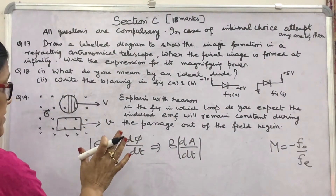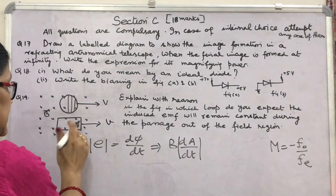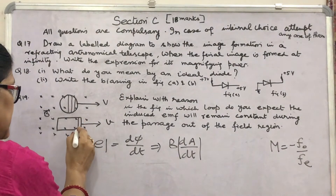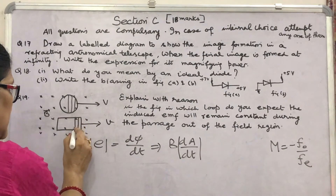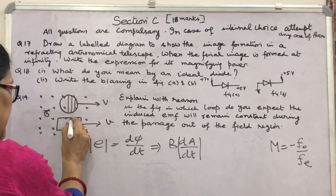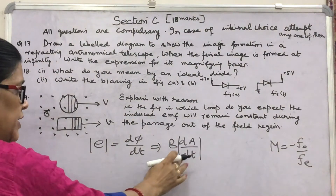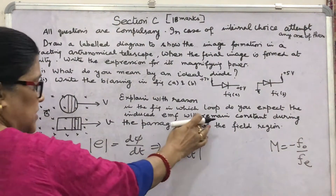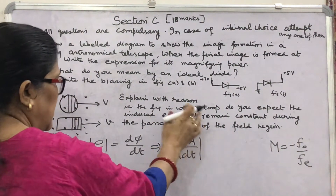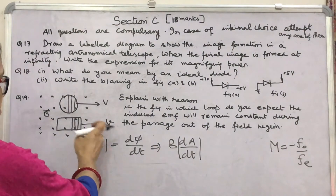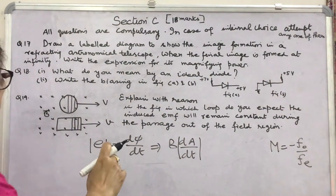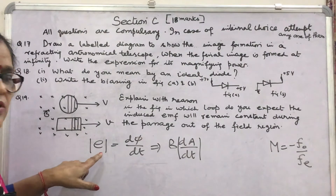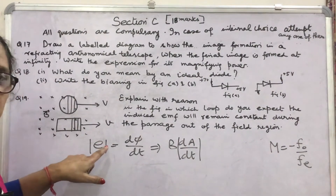In the case of the rectangular loop, the same area strip will come out at each instant, so dA/dt will remain the same and therefore E will remain constant. The answer is: the induced EMF remains constant in the rectangular loop.